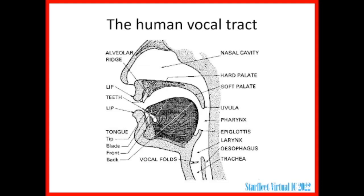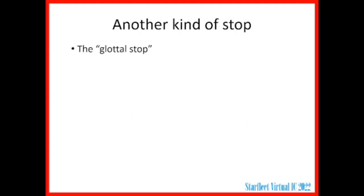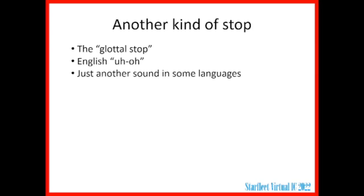Another place that you can produce stops is at the epiglottis — you can see how that can just cut off the flow of air right there. This is called a glottal stop. We have this in the English word "uh-oh," but we don't really use it anywhere else. If you say "uh-oh," you might even be able to feel that little bit of tightening in your throat. In other languages, though, this is just a consonant like any other that occurs in lots of words, like the standard Arabic "aktub" meaning "I write," or the Hawaiian name for Hawaii, Hawaiʻi.